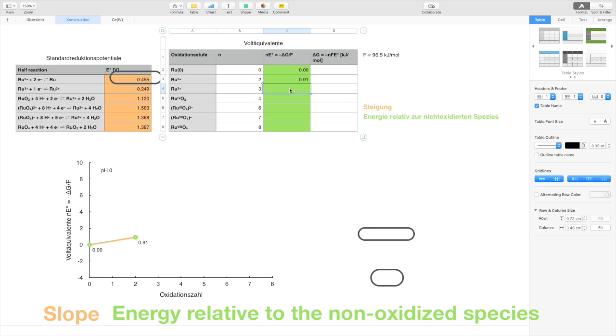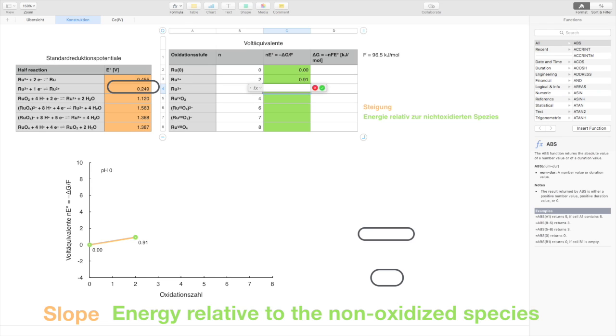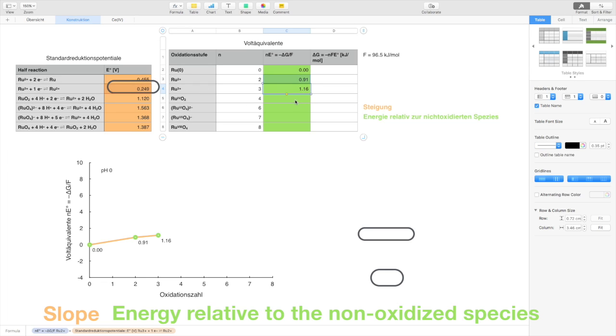Next is ruthenium 3. We have got the reduction potential between ruthenium 3 and ruthenium 2. We have just calculated the energy level of ruthenium 2. The slope between ruthenium 2 and ruthenium 3 is 0.249 volts. With this information at hand, we can calculate the energy level of ruthenium 3.